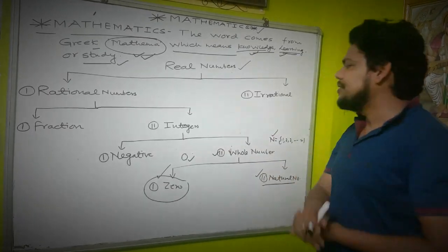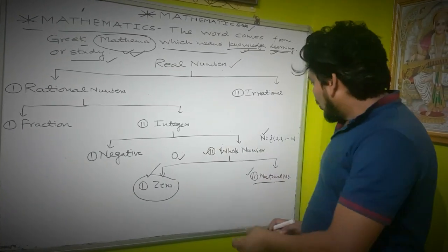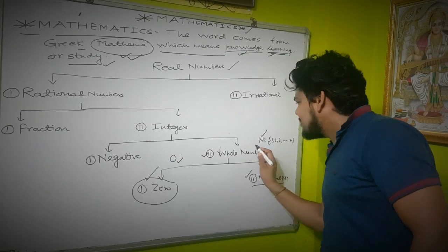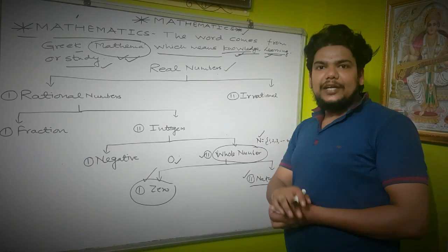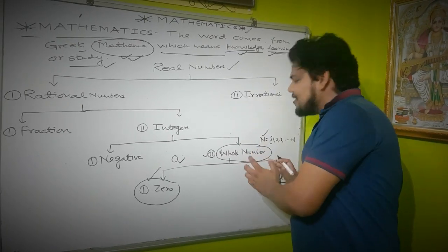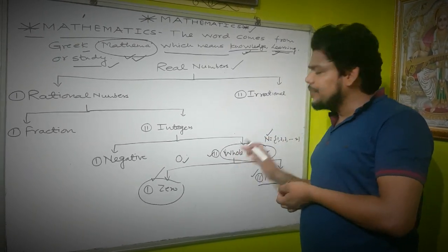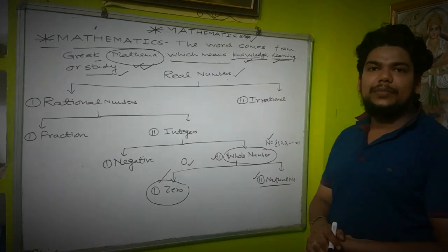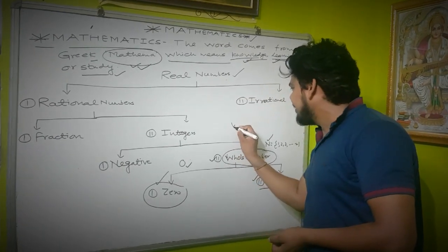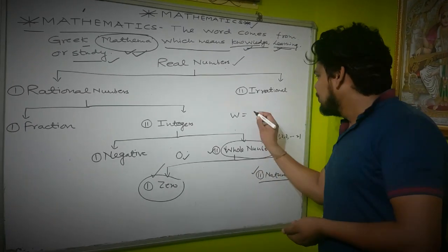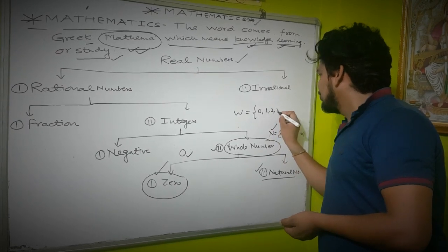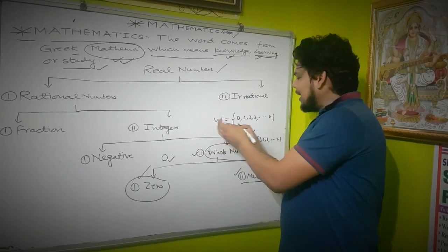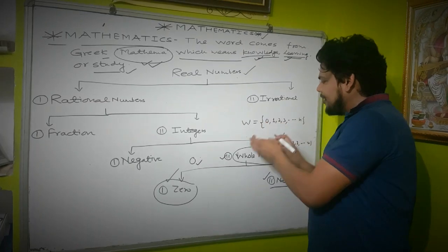The next part is the whole number. What is the whole number? The whole number is the set of all natural numbers together with zero. Whole numbers are represented by W. W equals 0, 1, 2, 3, up to n. So if we take all the natural numbers and add 0, we get the whole numbers.